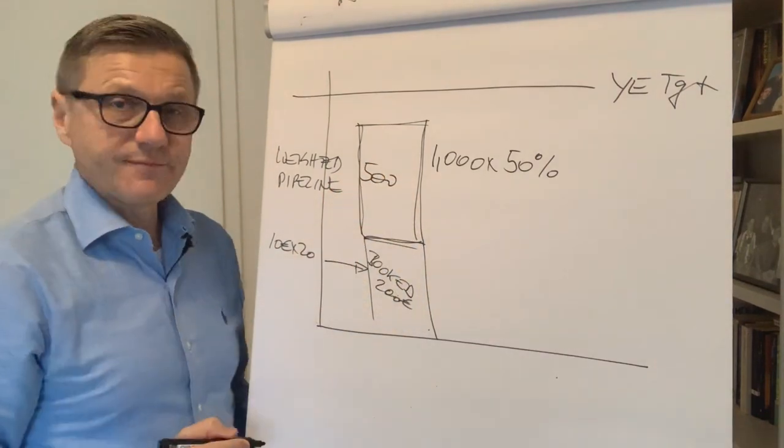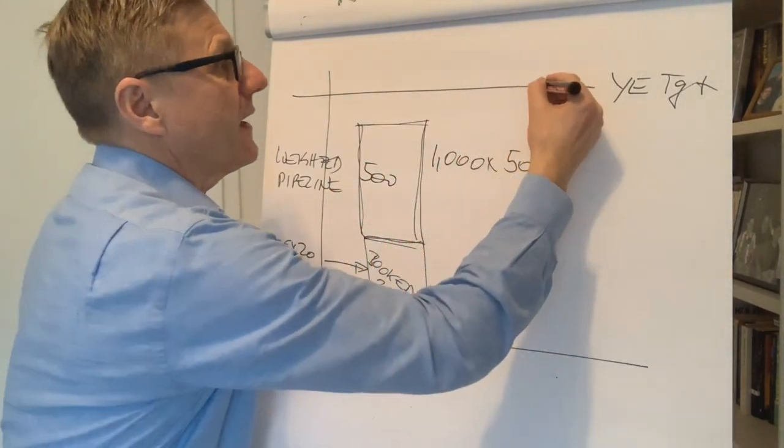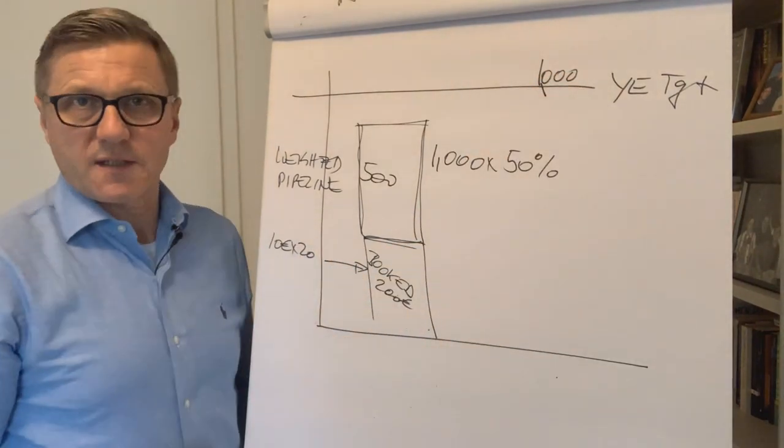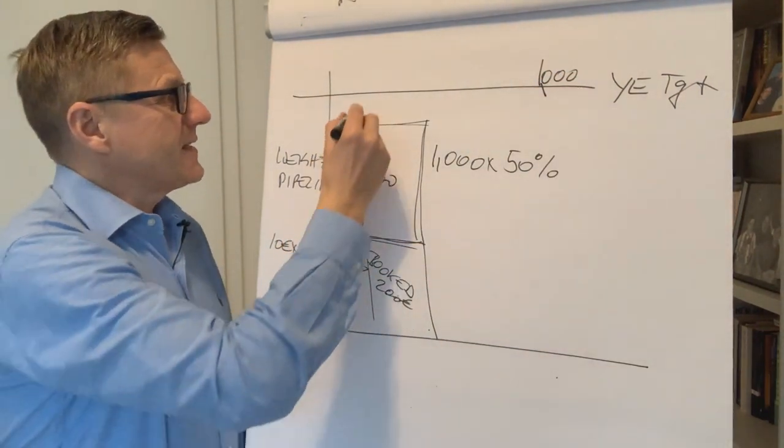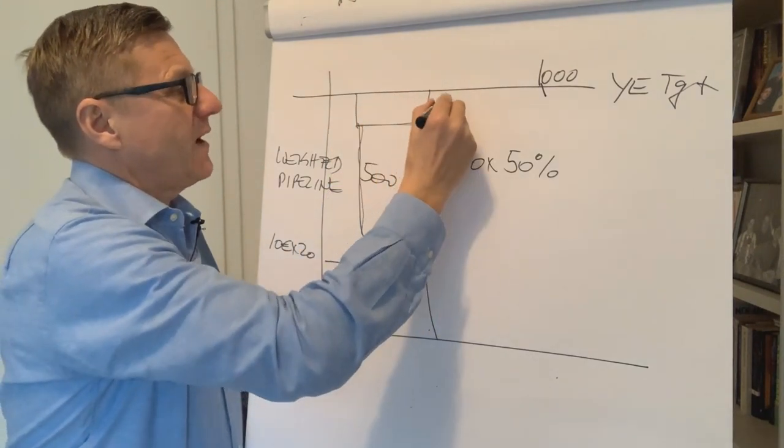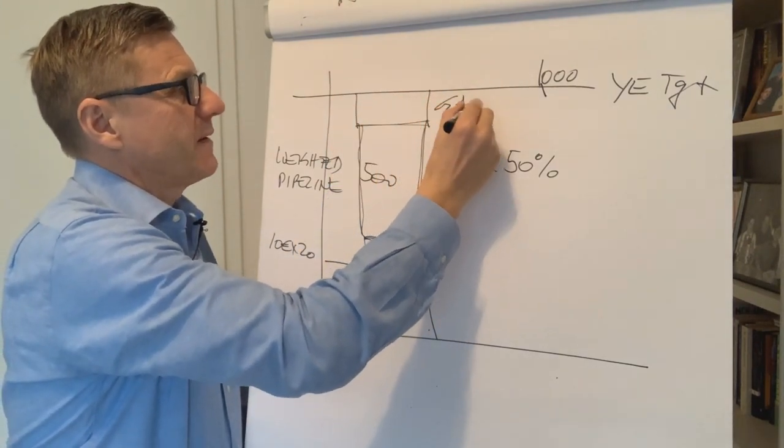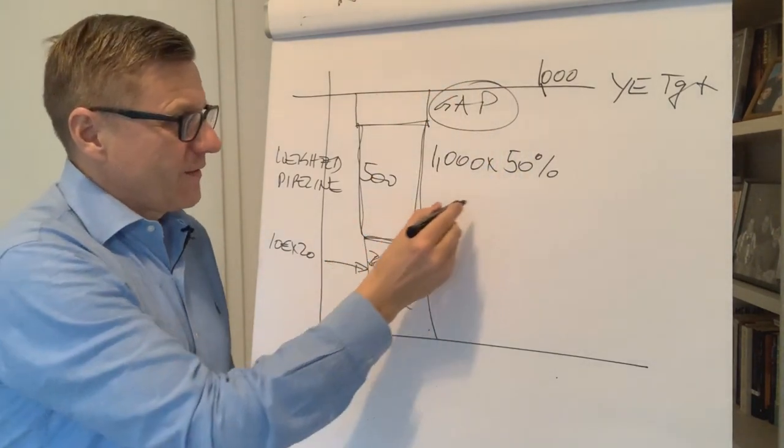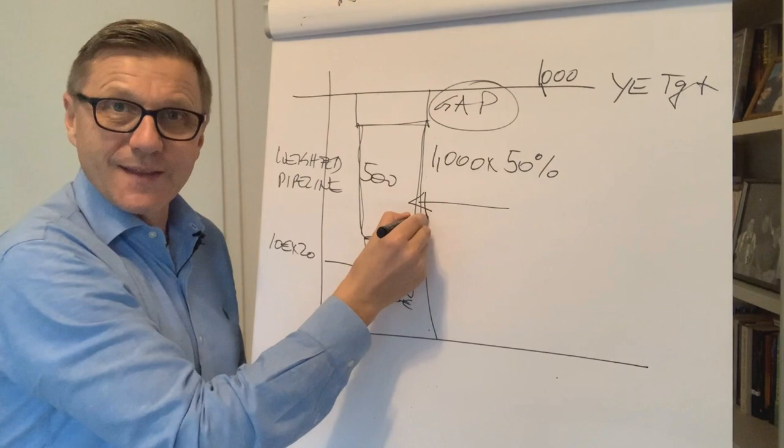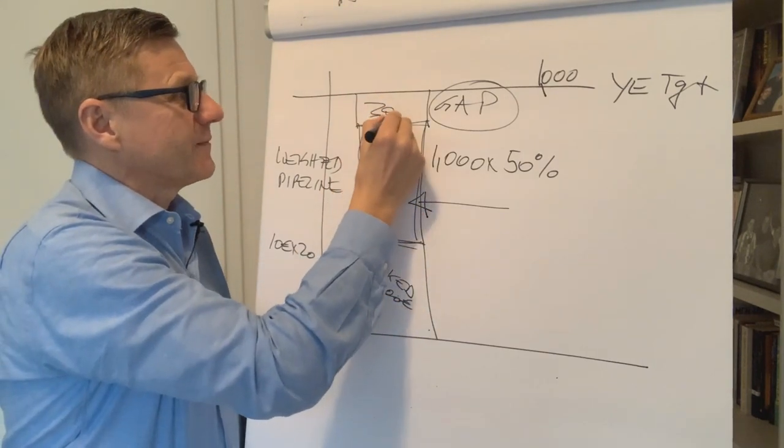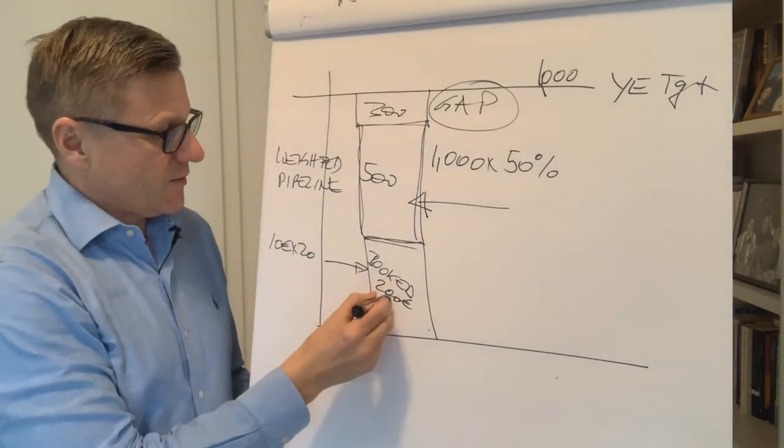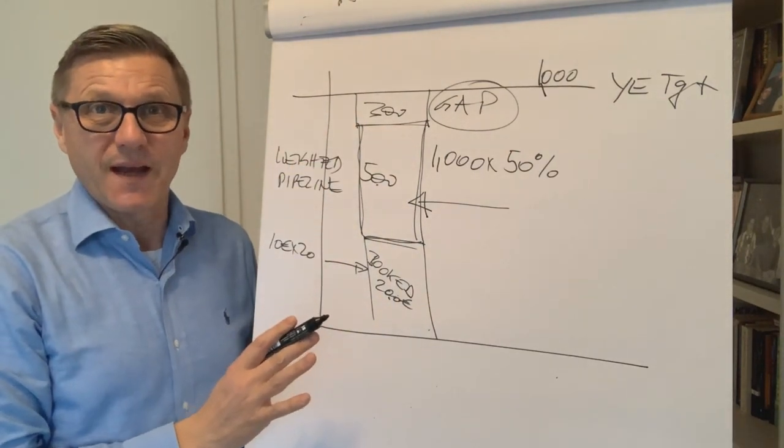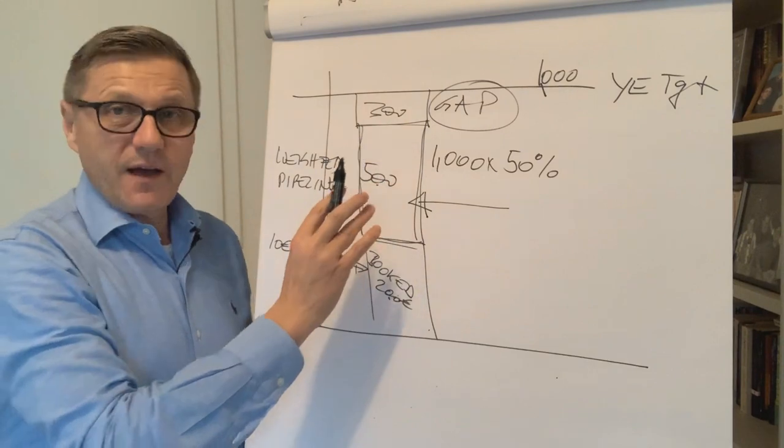Let's say that you have a total unweighted pipeline of 1000 that you can still win and the probability is 50 percent, then your weighted pipeline is 500. Now let's say that your goal for the year is 1000. That means that here you have a gap, something that you still need to fill with new opportunities in the pipeline of 300. 200 plus 500 is 700 plus 300 is 1000.